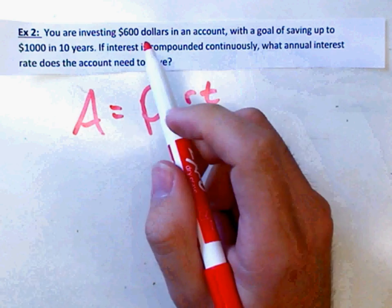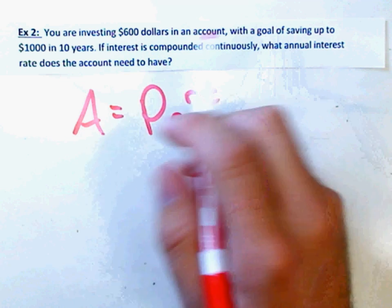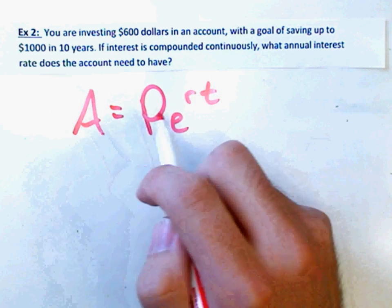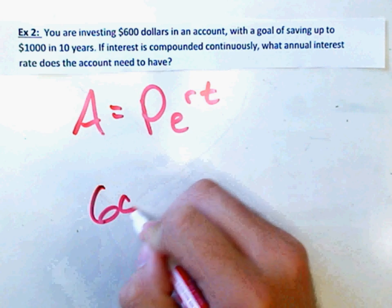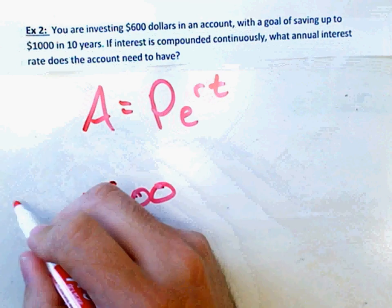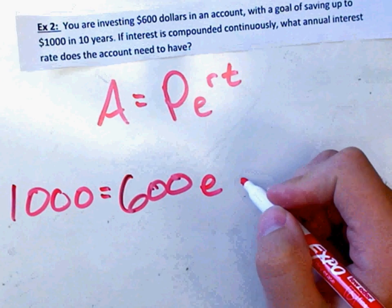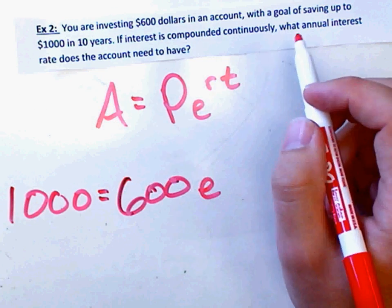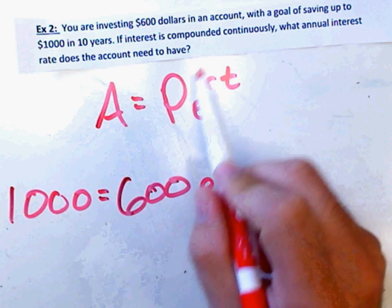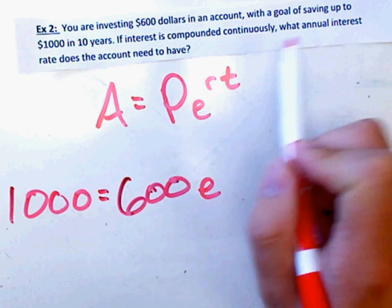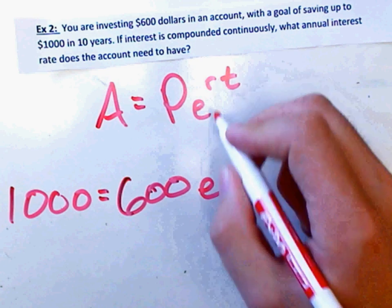So this time, we are investing $600. Investing, that's $600. That's our principle. With a goal of saving up to $1,000. That's our amount accumulated. We know the initial and the amount accumulated. And we want to do so in 10 years. So let's write in what we know. We know we're starting with $600. We want to end with $1,000. E is always E. Our rate, well, that's what we're looking for. Interest is compounded continuously. That, again, I got a little ahead of myself because I knew I was using this formula. But continuously, that tells us to use this one. What annual interest rate does the account need to have? We're solving for R. Which means we're going to say T is 10 and R is a variable.